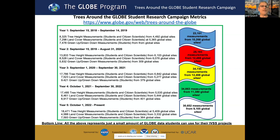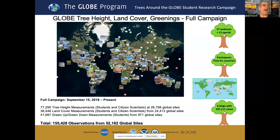With the campaign, I always pop on the metrics. In year five, which began on October 1st, 2022, measurements for tree heights, land cover, and green up/green down are coming in fast and furious. We have over 30,600 measurements from over 9,100 global sites. Adding up everything for the life of the campaign, which began when ICESat-2 launched on September 15th, 2018, we have over 155,000 observations from over 52,000 global sites.